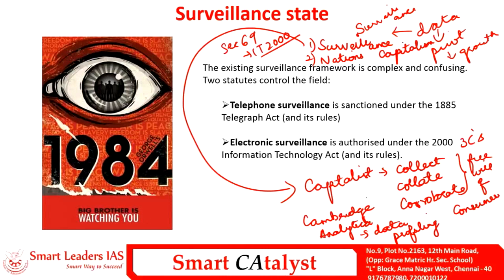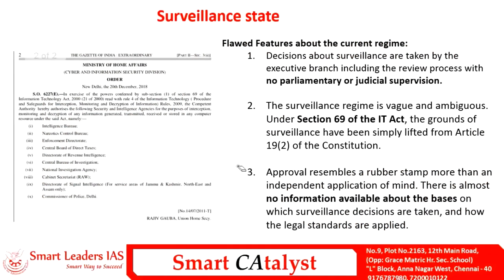What are the two important statutes that govern surveillance in India? The two statutes are the Telegraph Act 1885 and the Information Technology Act 2000. Telephone surveillance is sanctioned under the Telegraph Act 1885. The contemporary period is an epoch of digital communication, and with that the need for electronic surveillance has increased. So electronic surveillance has been introduced under the ambit of the Information Technology Act 2000. The existing surveillance regime in India has been criticized on three fronts.